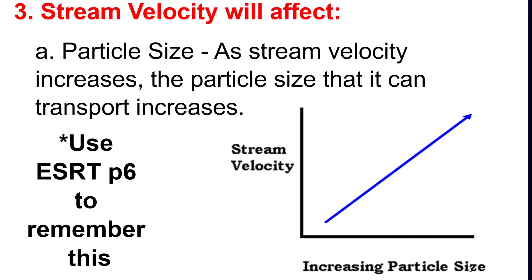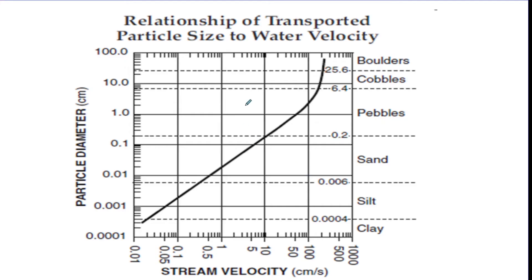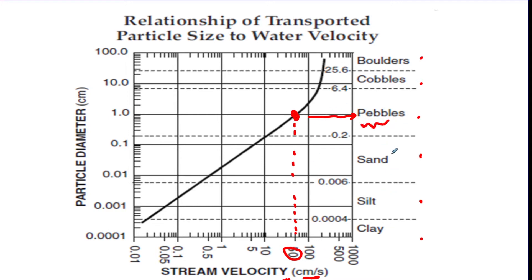For example, a slow stream probably can't move a boulder. This is a particle size chart that you should be able to read. It shows stream velocity on the bottom and compares different sized particles with the speed needed to move them. A velocity of 50 centimeters per second — if you go up to 50 and find where it hits the black line, you're in the pebbles category. So a stream velocity of 50 cm/s can move pebbles and anything lighter: sand, silt, and clay. It cannot move a cobble or a boulder.